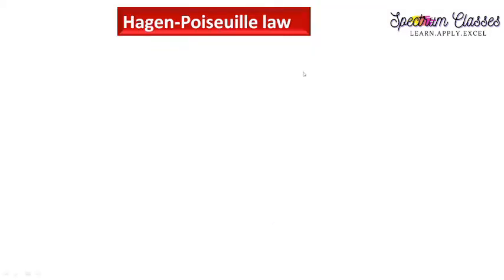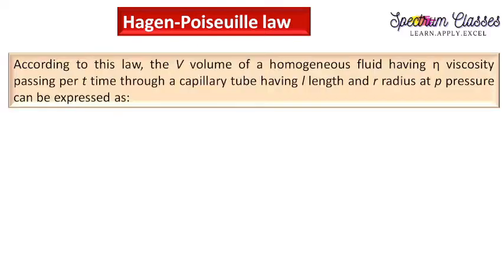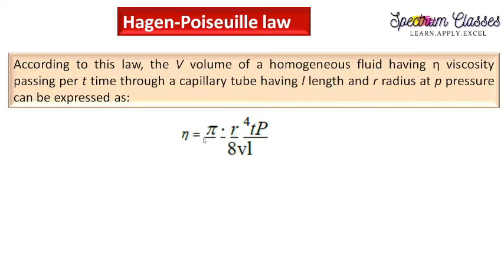What is Poiseuille's law? The scientist Hagen Poiseuille gave a law to measure viscosity. According to this law, the volume of a homogeneous fluid having viscosity eta, passing in time t through a capillary tube having length l and radius r at pressure p, can be expressed by the formula: eta = π r⁴ p t / 8 V l.